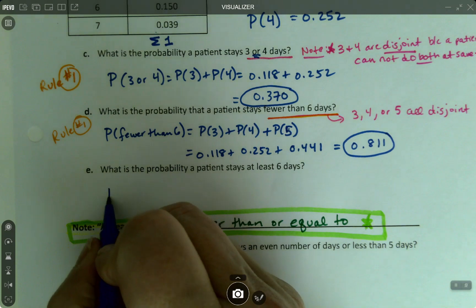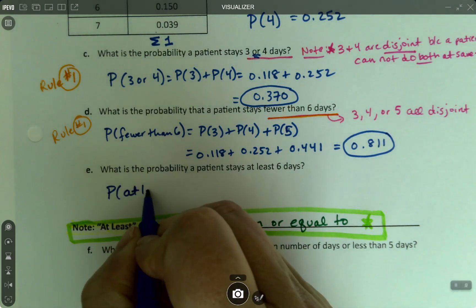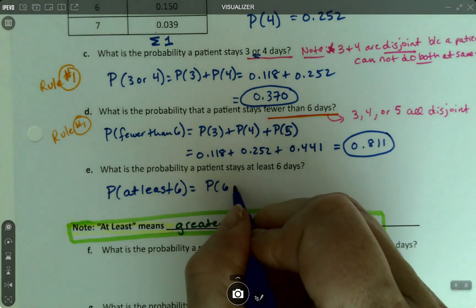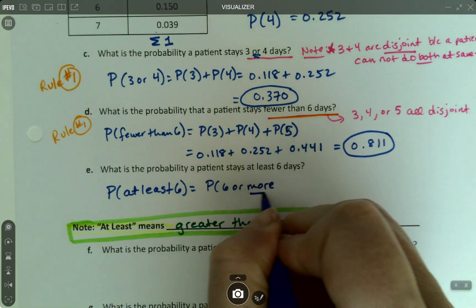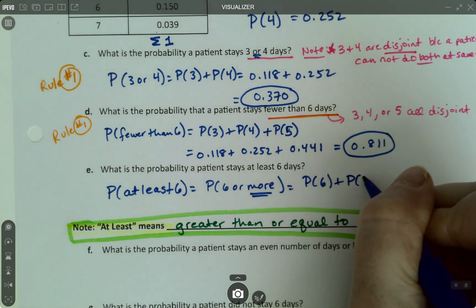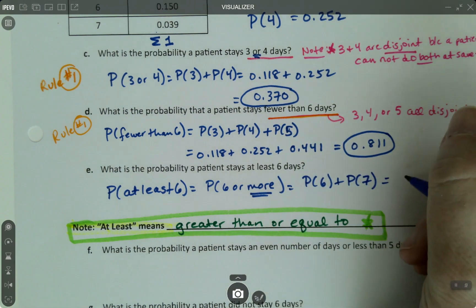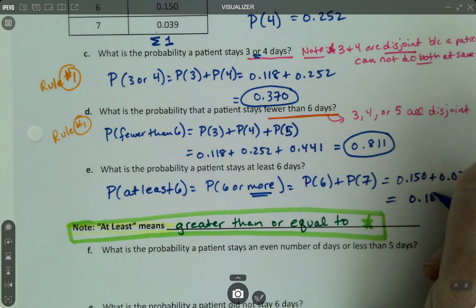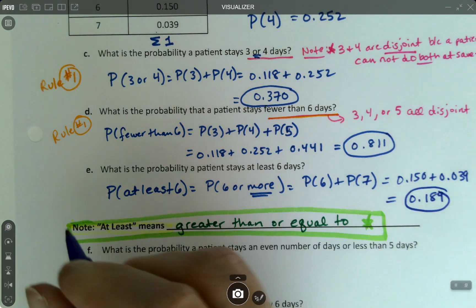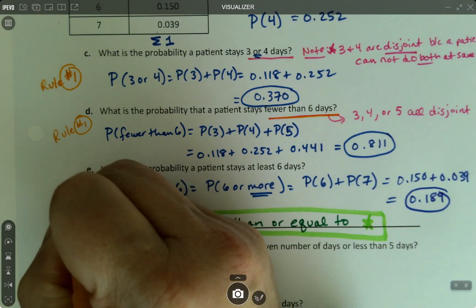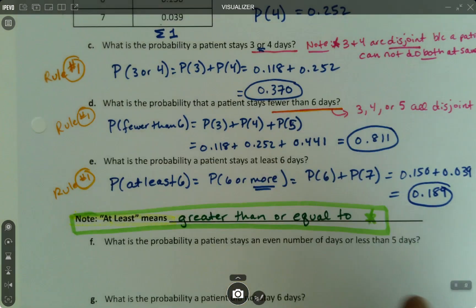So the probability that you stay at least six means the probability of six or more, which, of course, in this case would be the probability of six plus the probability of seven, which would be 0.150 plus 0.039, which is 0.189. So that's rule number one again. Everything so far has been disjoint.